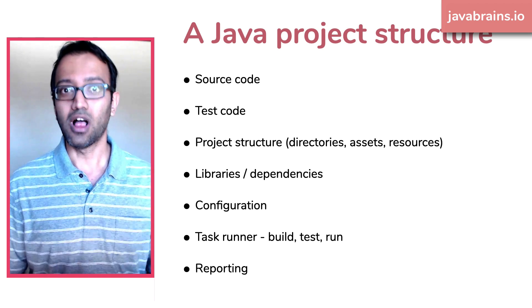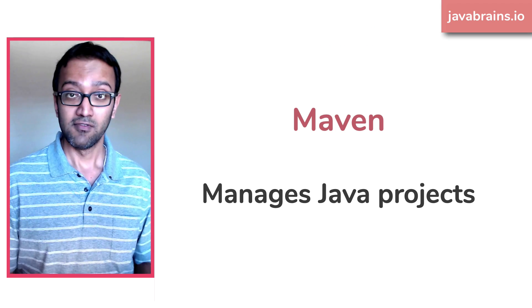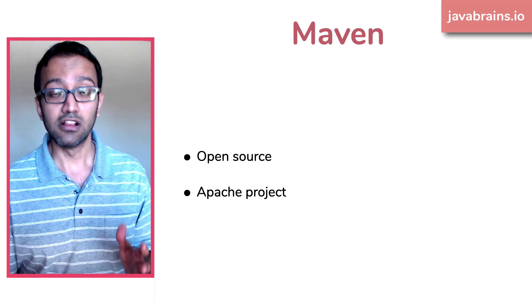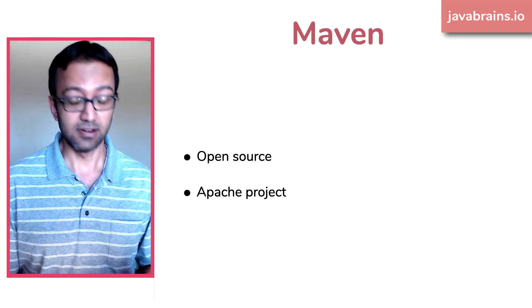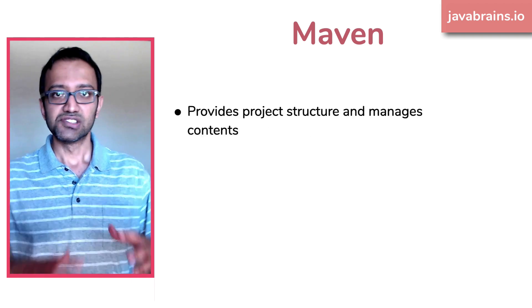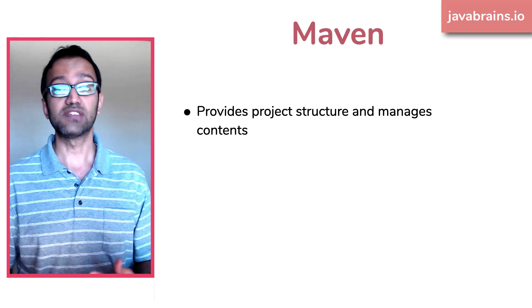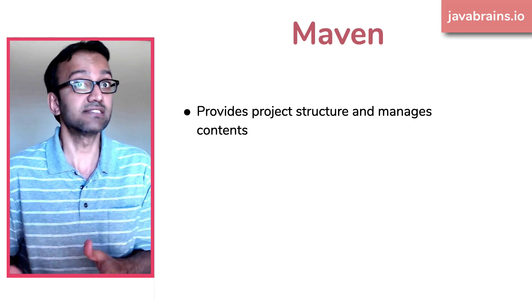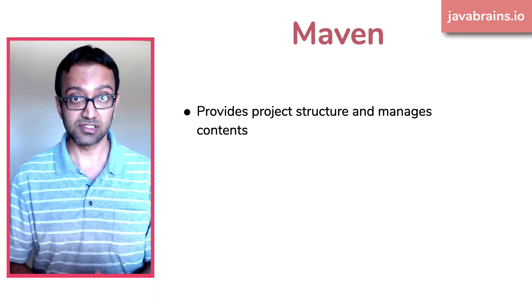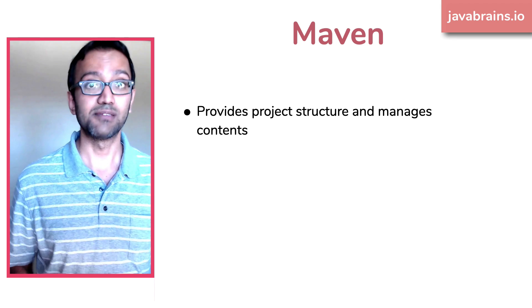Maven is an open-source Apache project that you can install on your machine to manage your Java projects. Maven provides this structure for any Java project and manages the contents of that project. It comes with an opinion of how that structure should be — where all the different things should go — and then it provides and manages that structure for you.